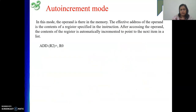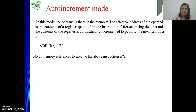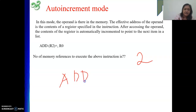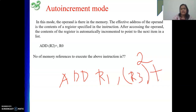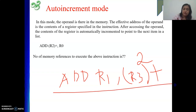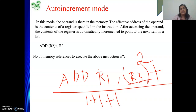For the instruction ADD R2+, R0, how many memory references? Two. But if I write ADD R1, R3+, then how many memory references? The answer will be three — one for fetch, one for getting the data from R3's memory location, and one for writing the result. So that is three memory references total.